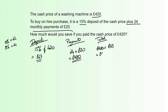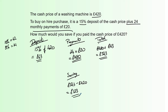That gives a total of £543. So paying by hire purchase over 24 months, you'd end up paying £543 for the washing machine. But the cash price was £420. To find how much you'd save, we subtract: £543 minus £420. That's quite easy without a calculator if you're careful — it gives you £123 saved.